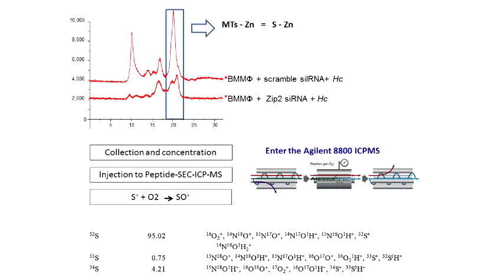Here's the bone marrow macrophage again — the scramble silencing RNA and the bone marrow macrophage silencing RNA. The scramble control allows a lot of metallothionine to form, while the silenced condition cuts it down.